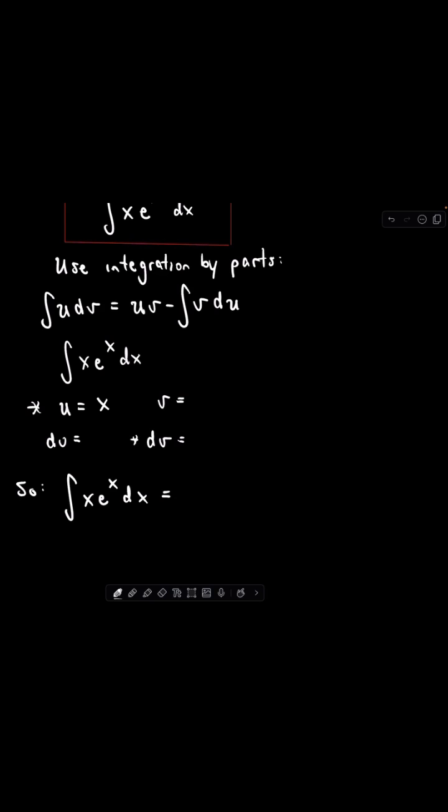and if we calculate the derivative, the derivative of that is just 1 dx, and I'll pick my dv to be the e to the x dx. The antiderivative of that is just e to the x.